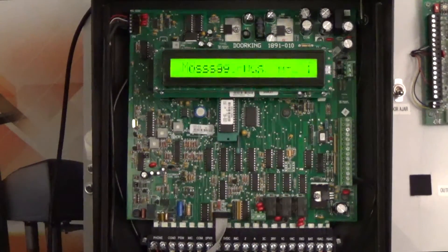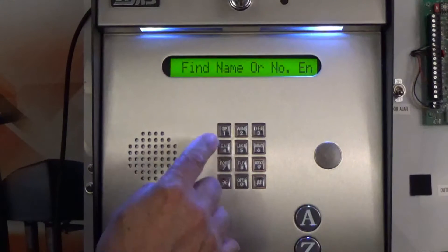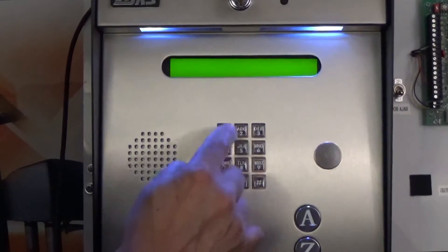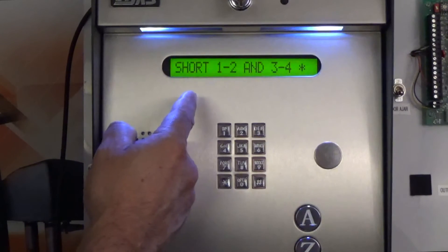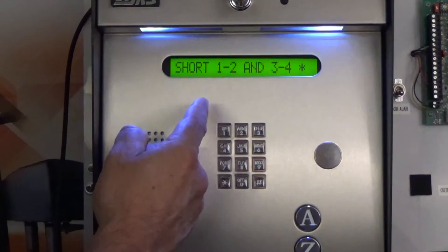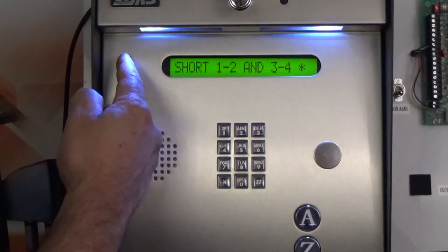Let's go ahead and start programming and start the test. We're going to enter star 17 and the master code. The unit display will read short one and two and three and four, instructing us to put a jumper on the RS232 terminal strip between terminals one and two and three and four. We opted to put the jumpers at the end of the serial cable to test the entire assembly.